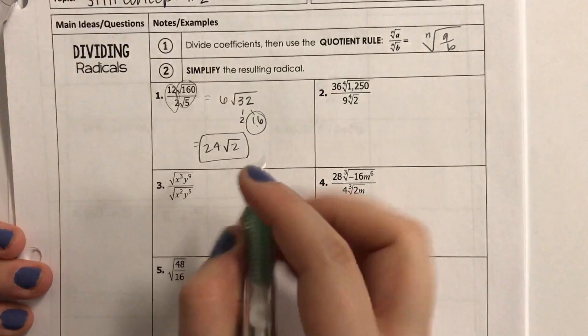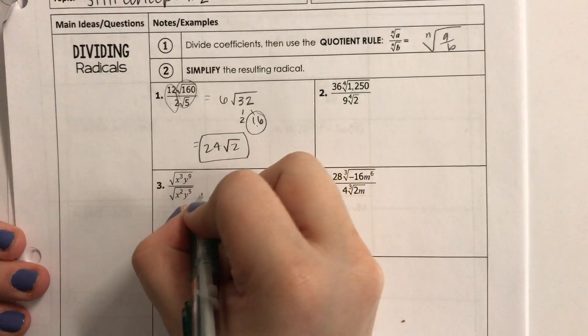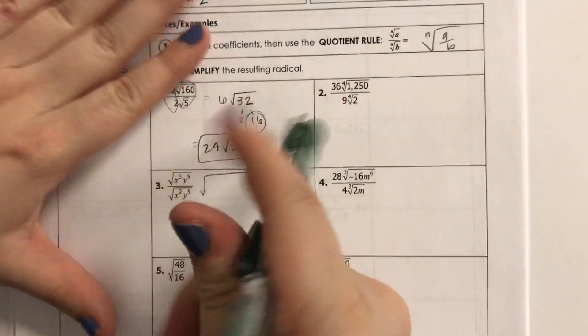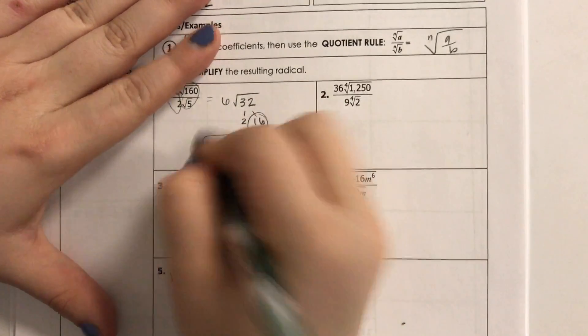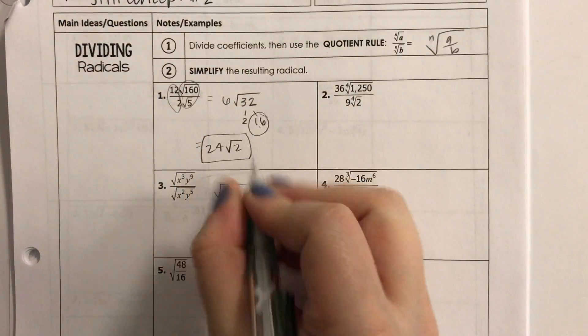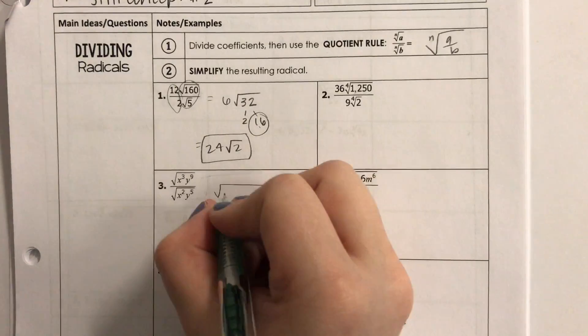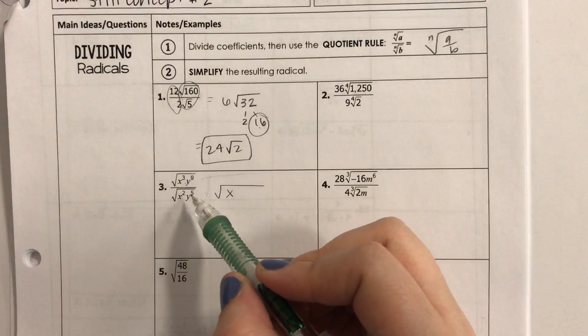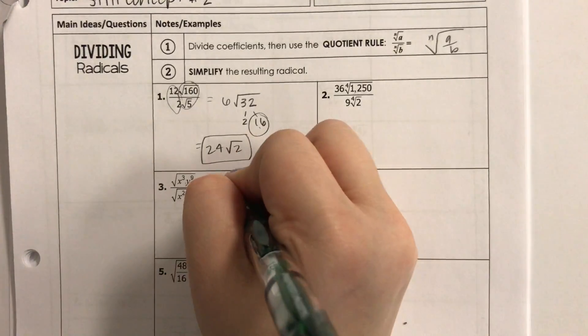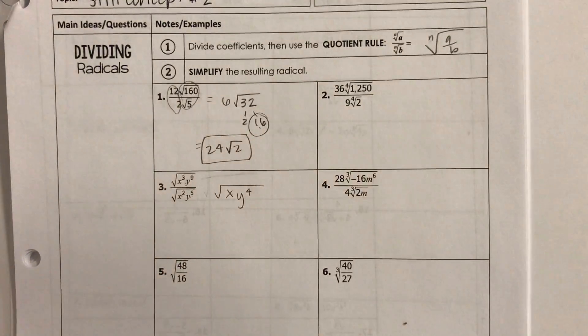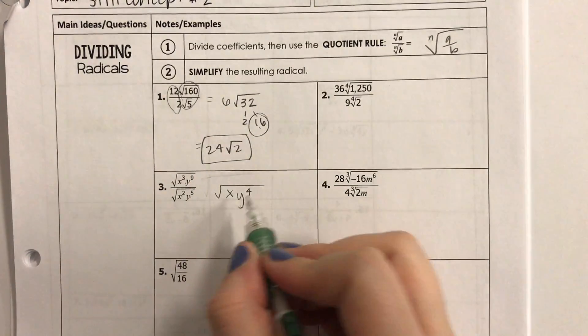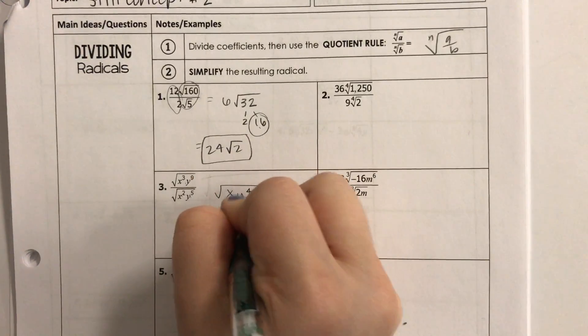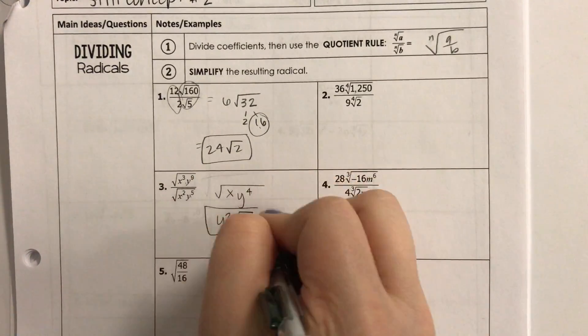Alright, let's try this one. So, square root. Oh, I'm just going to take the whole fraction. Actually, you know what, I'm not even going to do that. We're just going to divide. So, it's the square root. X cubed divided by x squared is x. Okay. Y to the 9th divided by y to the 5th is y to the 4th. And I can simplify this. 4 divided by 2 is 2. And I can't take the square root of x, so I'm done.